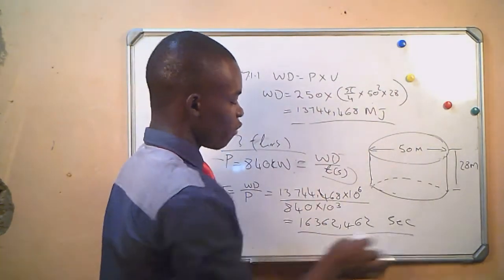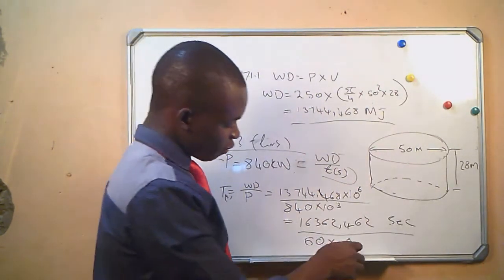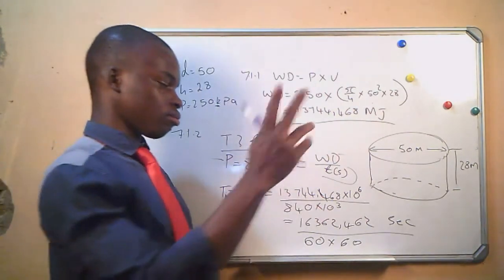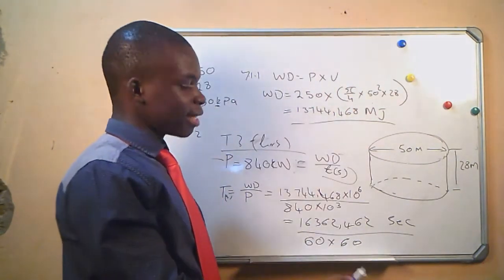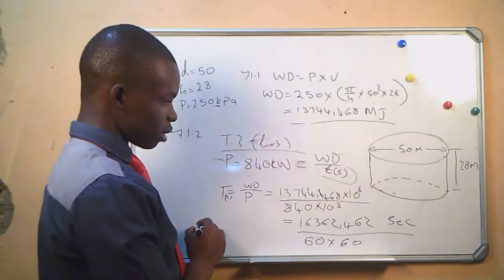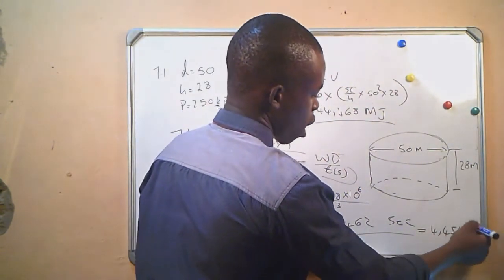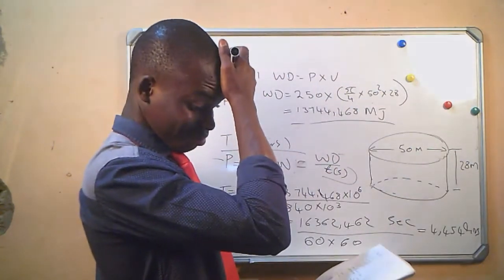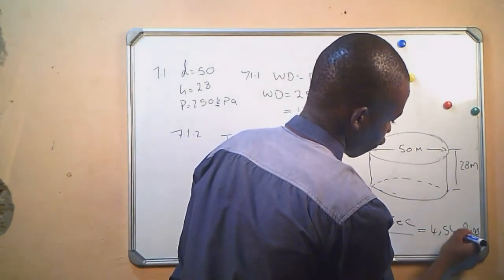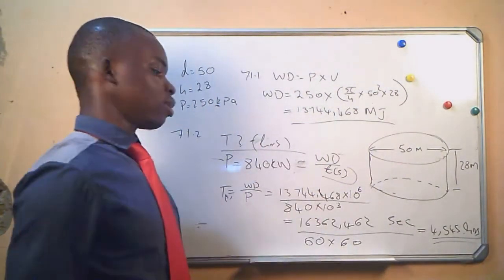We are asked for the time in hours, so we divide by 60 to convert from seconds to minutes, then divide by another 60 to convert from minutes to hours. Our answer is 4.545 hours. That is our answer for the time in hours.